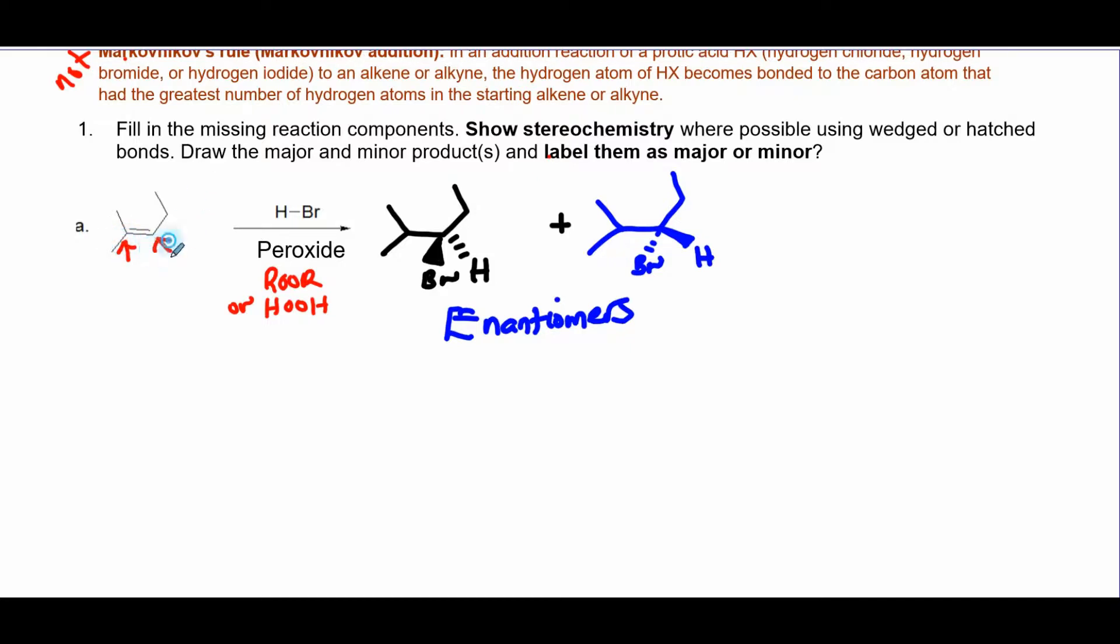And the Br should end up there. So that's where the Br should go and that's where the H should go. And you lose the pi bond, so generally you're going to get this structure. But because this carbon here is asymmetric—this carbon has four different groups around it...